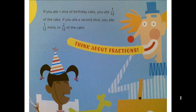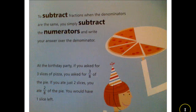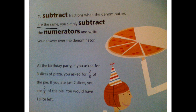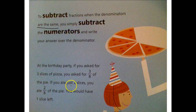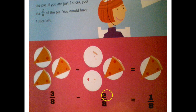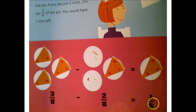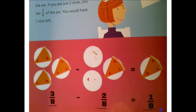If you ate one slice of birthday cake, you ate one-twelfth of the cake. If you ate a second slice, you ate one-twelfth more, or two-twelfths. To subtract fractions when the denominators are the same, you simply subtract the numerators and write your answer over the denominator. At the birthday party, if you asked for three slices of pizza, you asked for three-eighths of the pie. If you ate just two slices, you ate two-eighths. Three-eighths take away two-eighths is one-eighth. Three take away two is one, and our denominators stay the same.